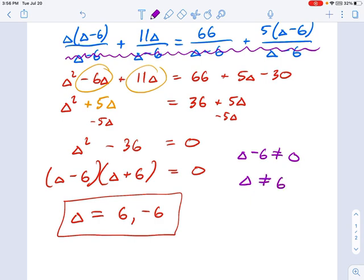This is a nice example where one of the solutions we found is okay, but one of them is no good. So when I write my final answer, I would just say delta equals negative six for this one.